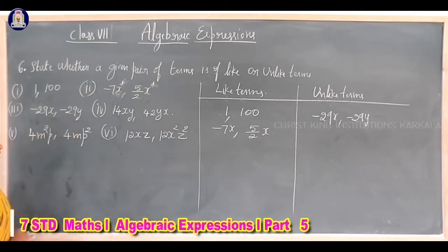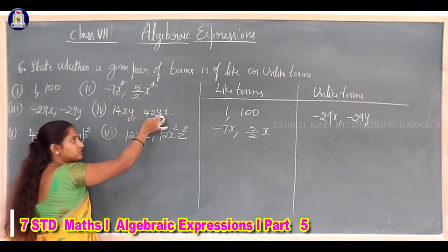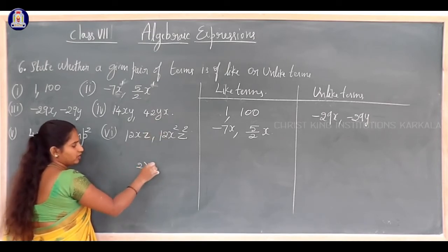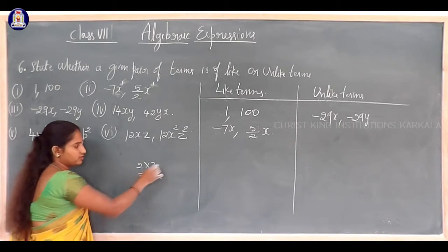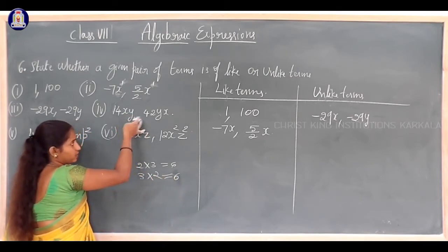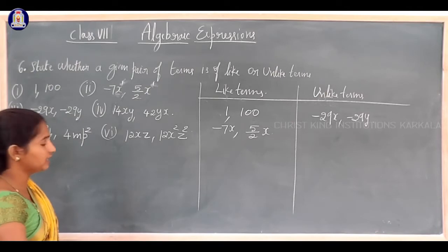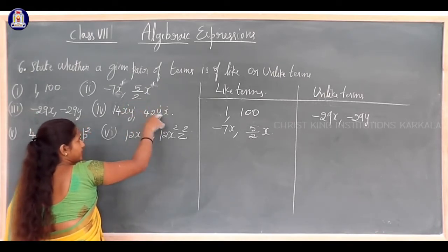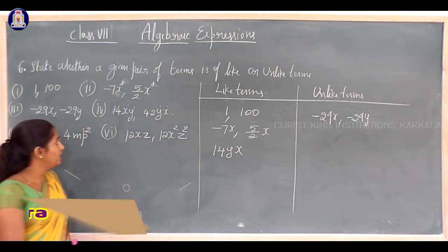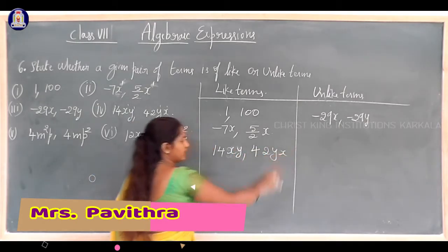Fourth: 14xy and 42yx. The variables are xy and yx — multiplication can be written in any order, like 2×3 and 3×2 both equal 6 — so xy and yx are the same variable with the same exponent. Therefore 14xy and 42yx are like terms.